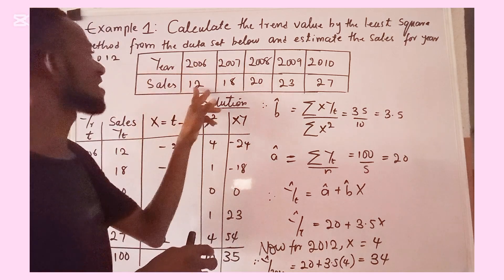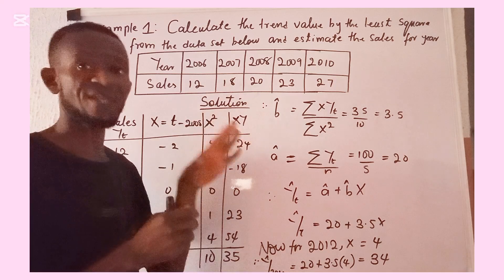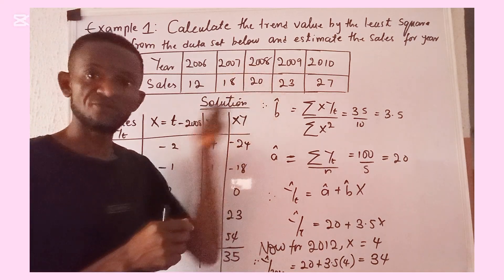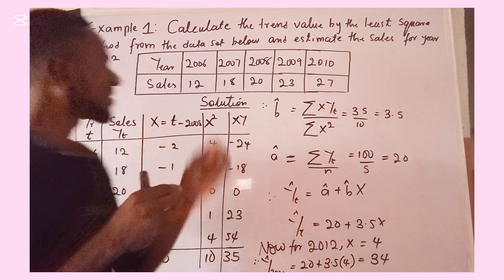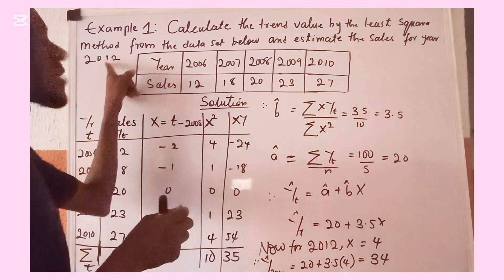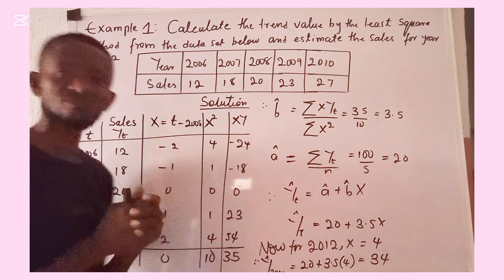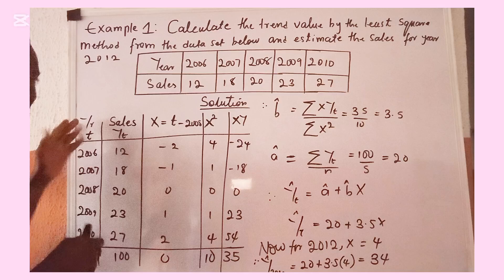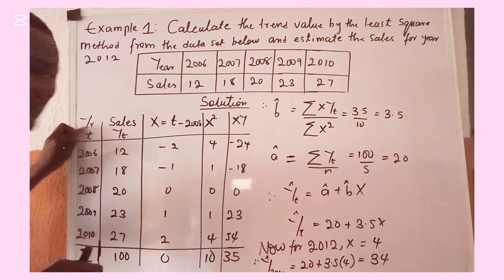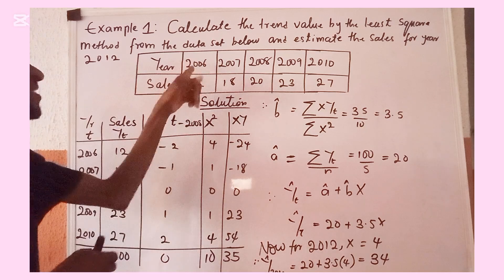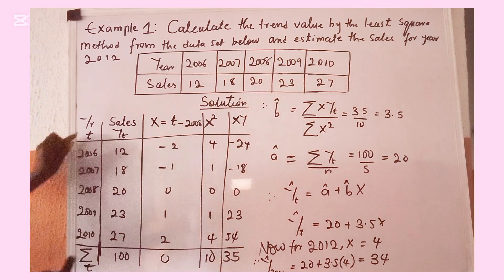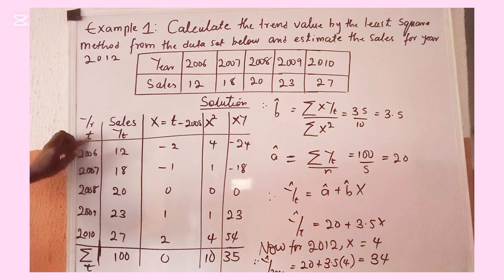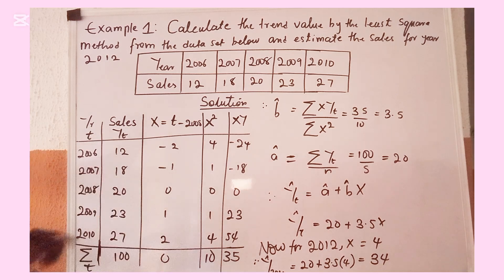In year 2006 the sale is 12, in 2007 it is 18, and so on down the line. They ask us to use this information, fit a time series trend on this data, and use this trend to predict the sales in 2012. In our worked solution, the year represents time — 2006, 2007, 2008 — running down to 2010.